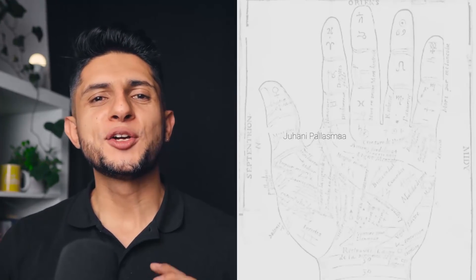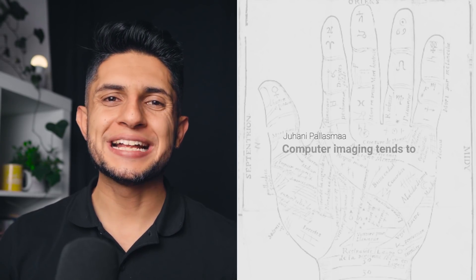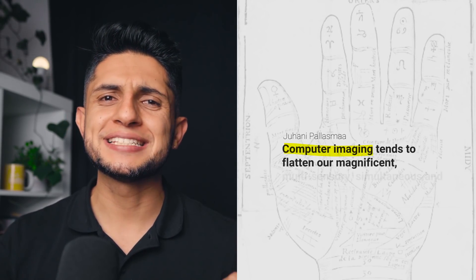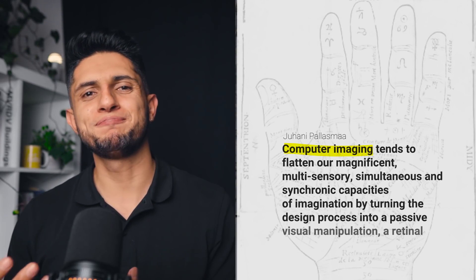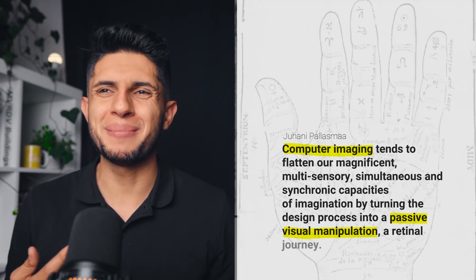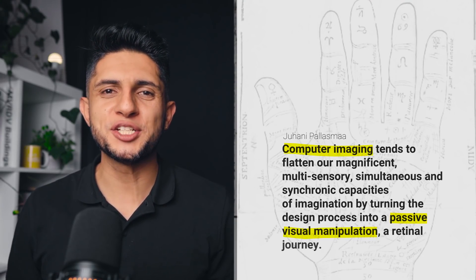Giovanni Palazma says, computer imaging tends to flatten our magnificent, multi-sensory, simultaneous, and synchronic capacities of imagination by turning the design process into a passive visual manipulation, a retinal journey. Having that in mind, we also need to understand the importance of a conceptualized physical model of our project, even if it is digital. Seeing pictures of physical models lets us understand space, light, and materiality in a way that renders can't.